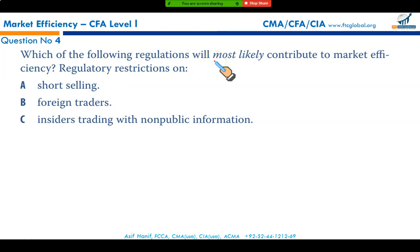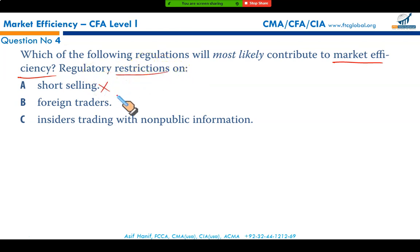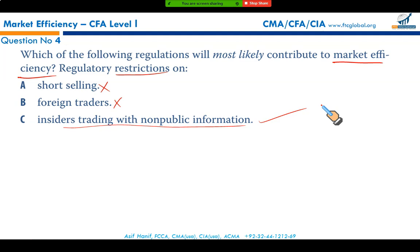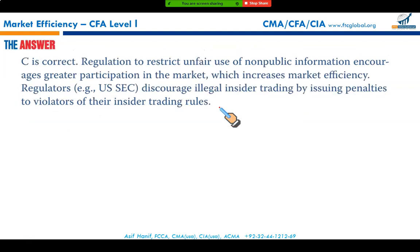Question four asks which regulation will most likely contribute to market efficiency. Regulatory restriction on short selling is wrong — short selling should not be discouraged. Arbitrage should not be discouraged either, as it results in market efficiency. Allowing foreign traders improves market liquidity and efficiency. Restricting insider trading with non-public information is the correct answer, as there are stringent laws in the U.S. with heavy fines and imprisonment up to 20 years.